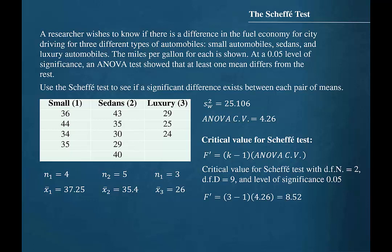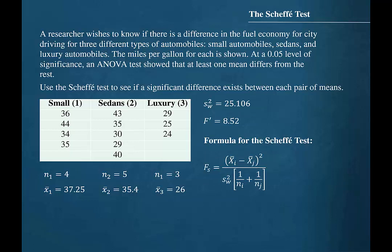So our critical value for the Scheffé test is 8.52. In the numerator of the formula for the test value, we square the difference between the sample means for the two populations being compared. We then divide that quantity by the within-group variance and the sum of the inverses of the sample sizes.